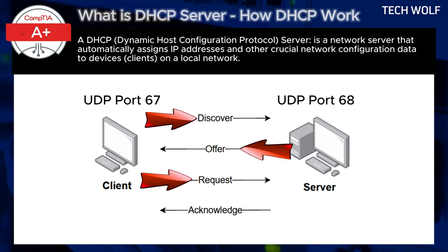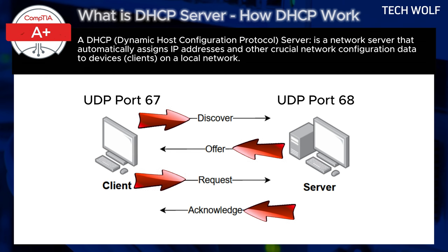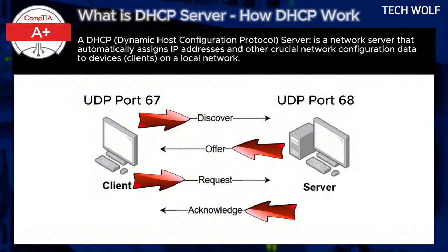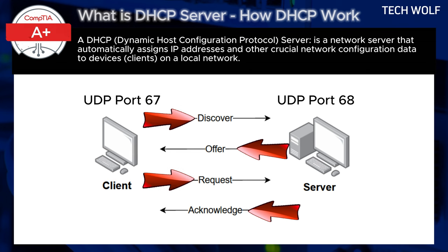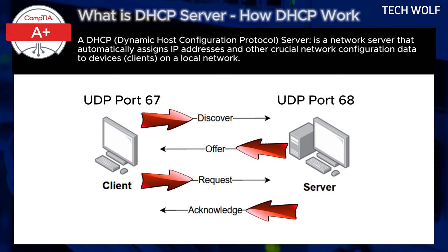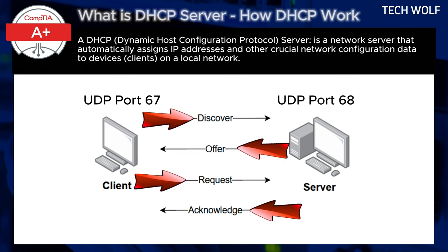Step 4 is DHCP Acknowledgement, or ACK, server to client on UDP port 68. Finally, the DHCP server sends a DHCP ACK packet to confirm the IP address assignment and other configuration details. This packet is sent to UDP port 68, notifying the client that it can now use the IP address and network settings assigned. At this point, the client is fully configured with an IP address and other necessary network settings, allowing it to communicate on the network.